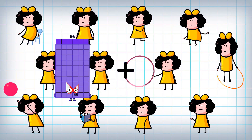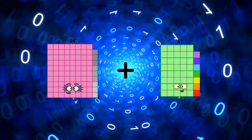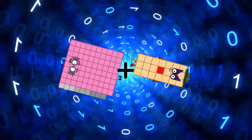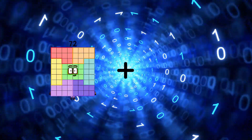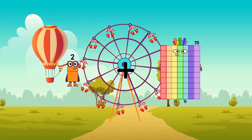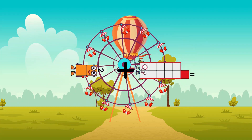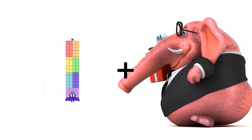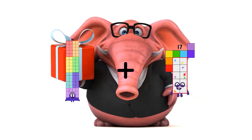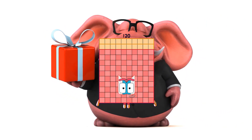89 plus 21 equals 110. 2 plus 11 equals 13. 76 plus 44 equals 120.